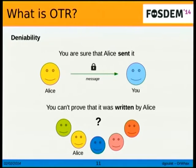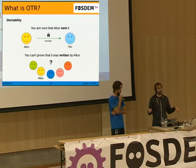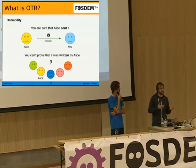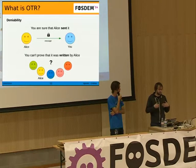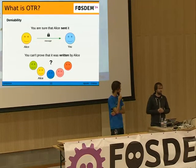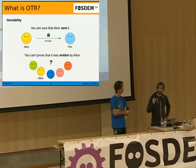The deniability part: OTR was created with a deniability feature. We're not cryptographers, just developers, but basically deniability means you are assured that you're receiving a message from Alice — that's what OTR guarantees — but you can't prove that it was written by Alice. So if you get compromised, mathematically it can't be proven that you wrote the message. It seems like a pretty nice feature, but we don't actually know if it's been used in court or legal battles. If anyone knows a case where OTR's deniability has been used, please speak up.